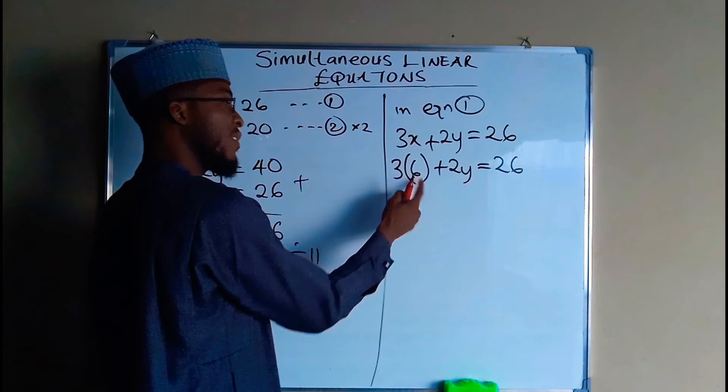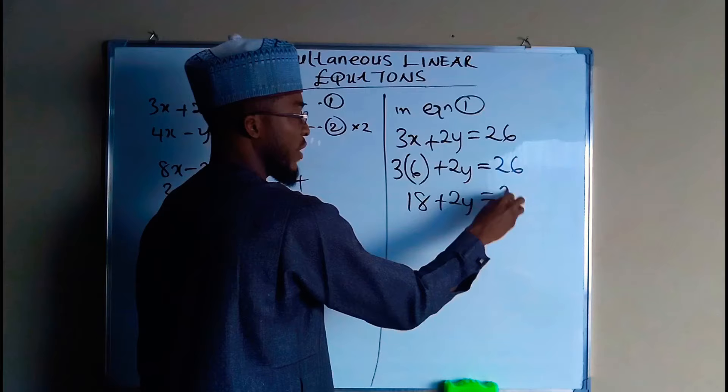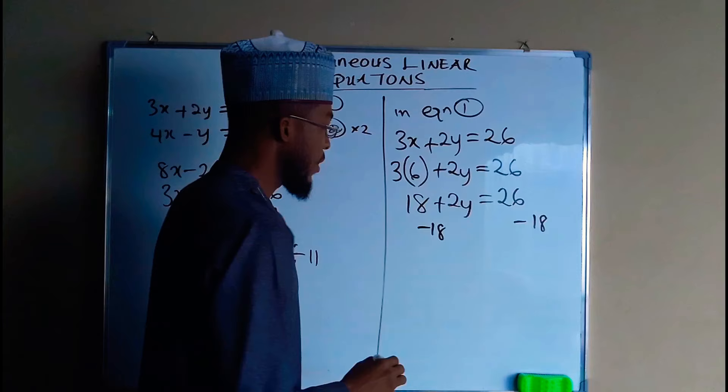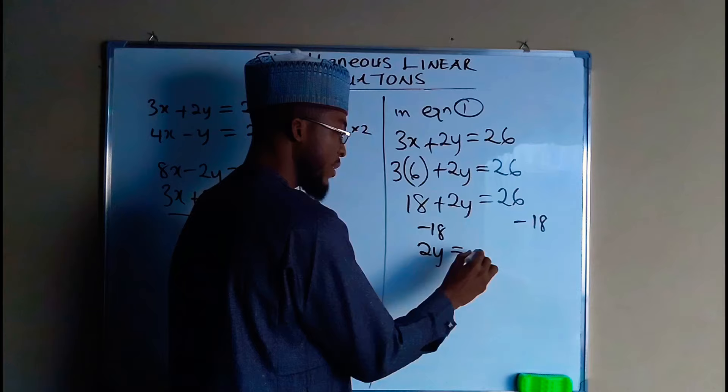And this is equal to 26. Now subtract 18 from both sides. 18 minus 18 is 0, so we have 2y on the left hand side and 26 minus 18 is equal to 8.